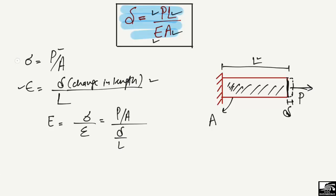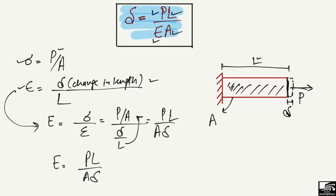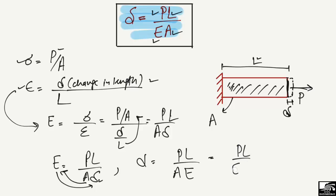Substituting these values into the equation and simplifying: E equals P divided by A, with L coming to the numerator, giving E = PL / (A × sigma). Rearranging, the deformation small sigma equals PL / (AE). This is the deformation formula.